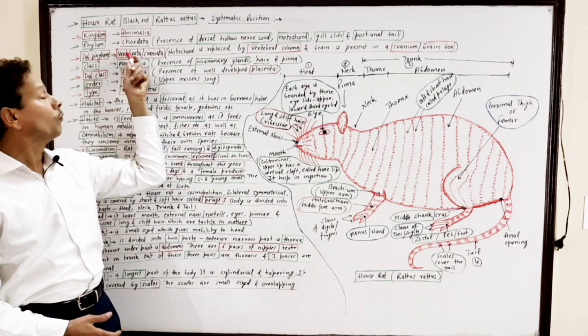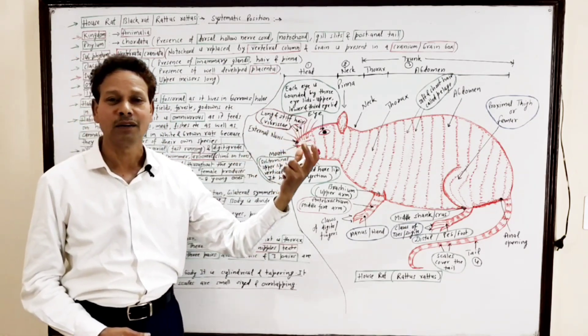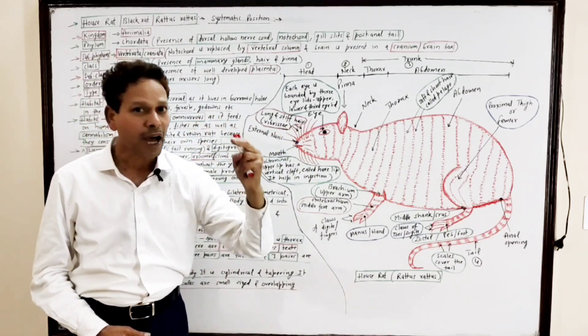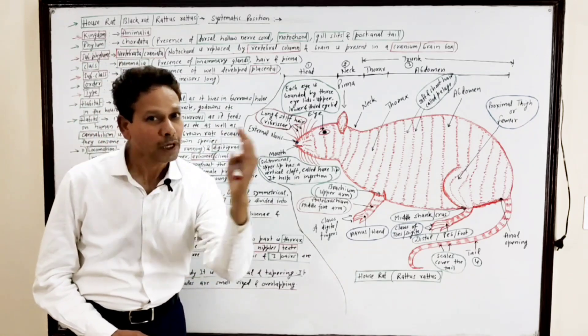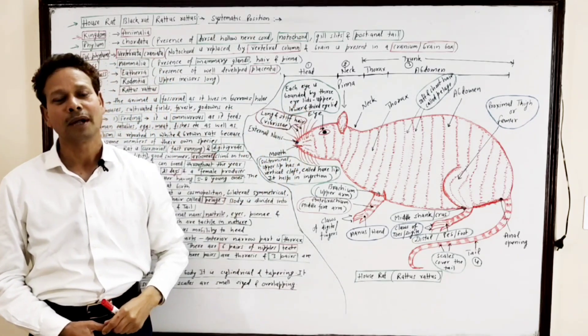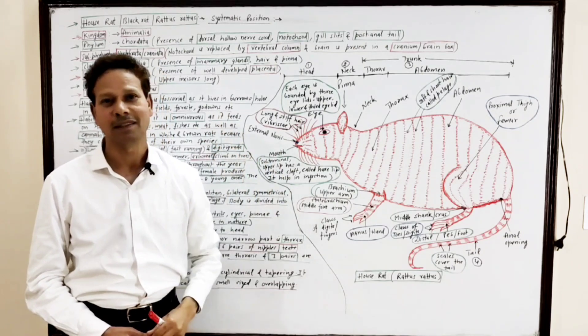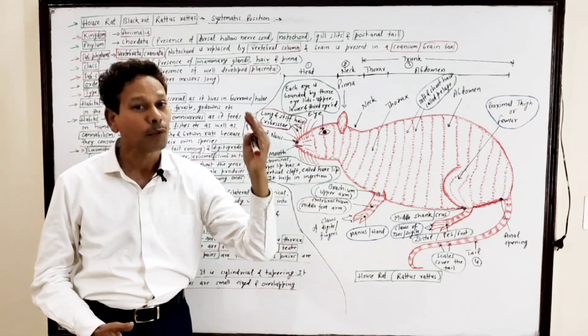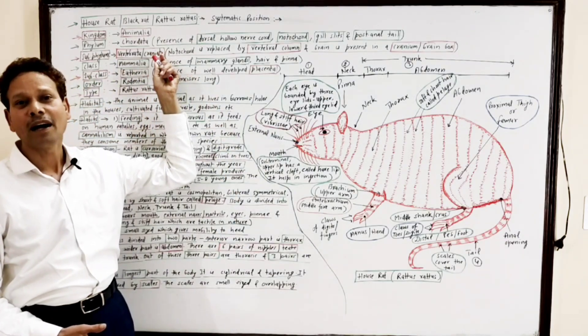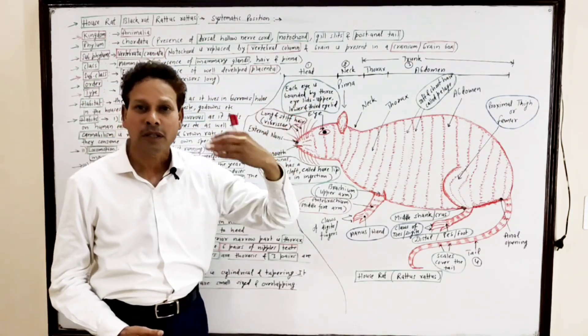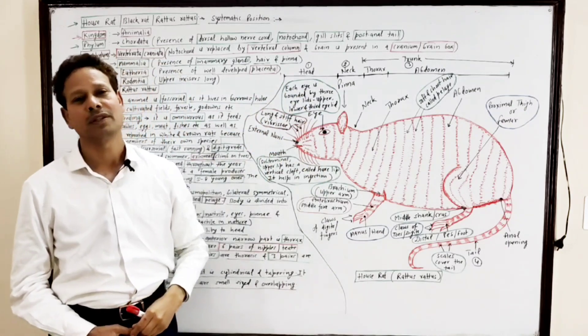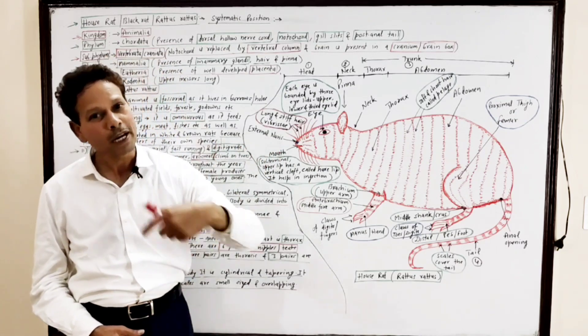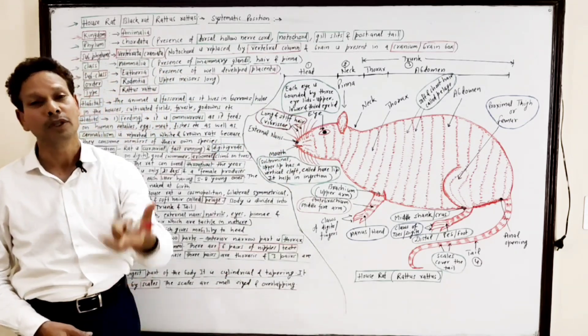Subphylum Vertebrata or Craniata. Vertebrata means at the time of development, the notochord is developed and that notochord is replaced by a vertebral column. That's why these are vertebrates. Craniata means the brain is enclosed in a cavity, in a brain box, the cranium.